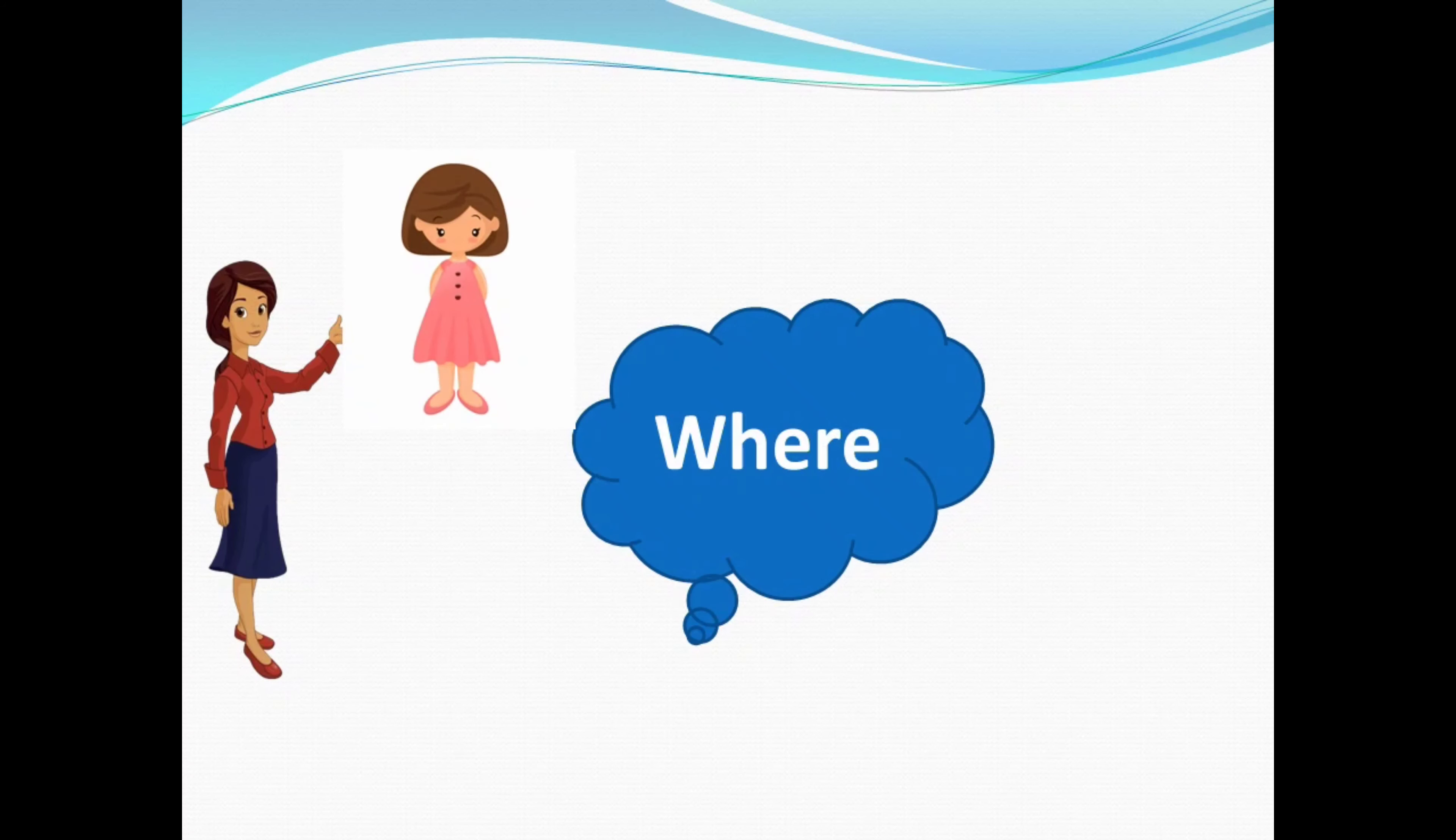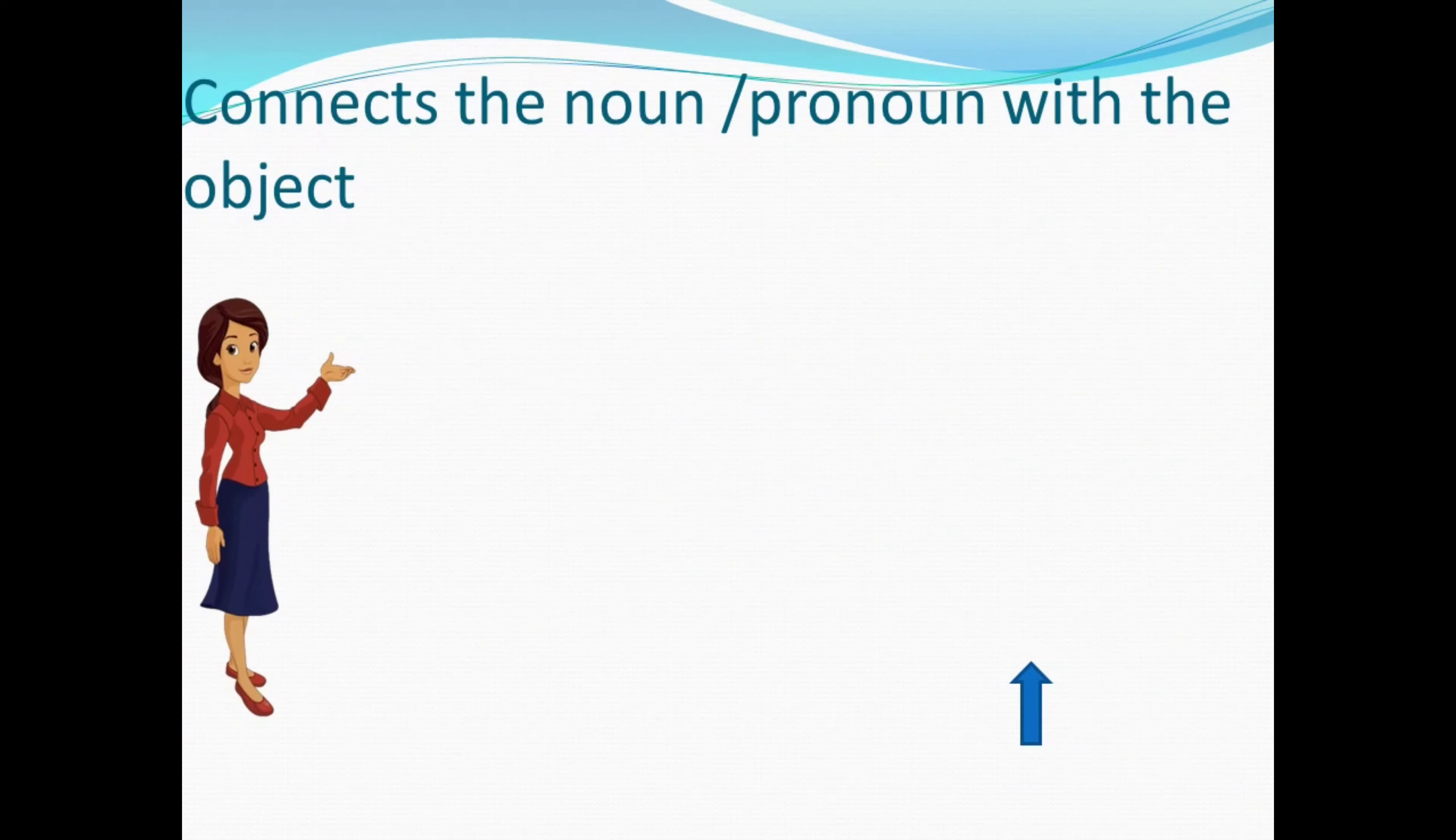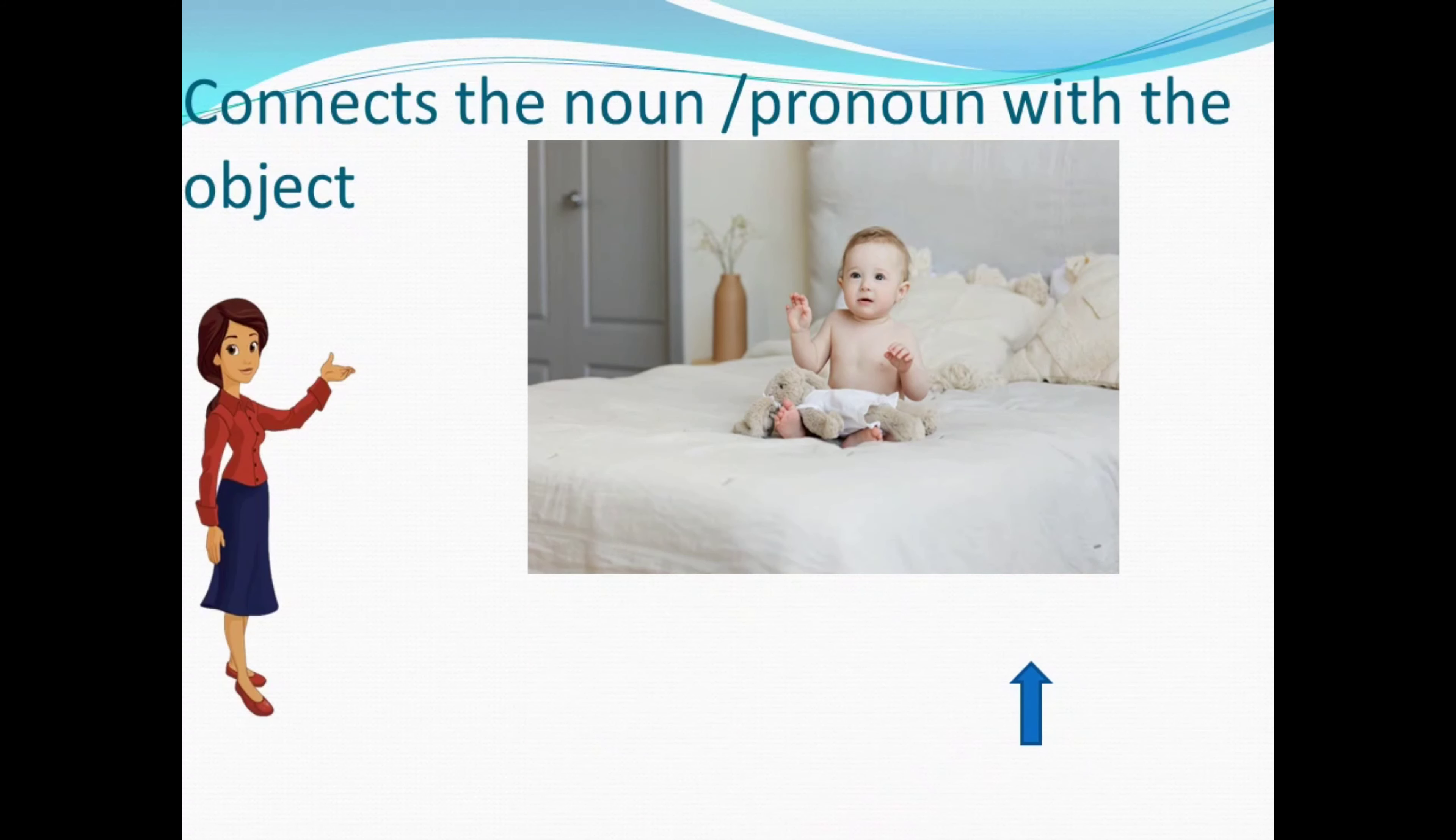What is the work of a preposition? The preposition connects the noun or a pronoun with the object. So as we can see in the image, there is a baby and a bed.